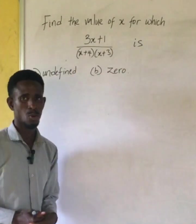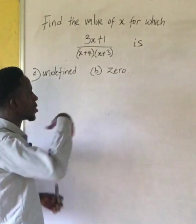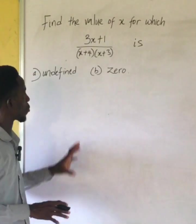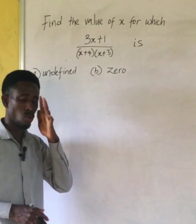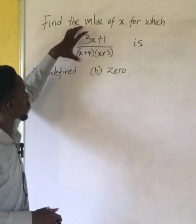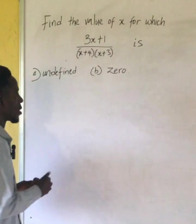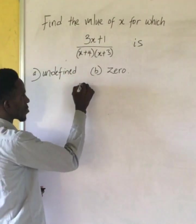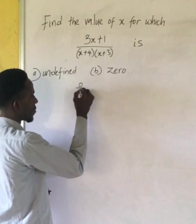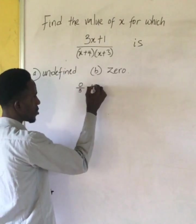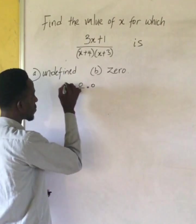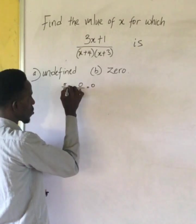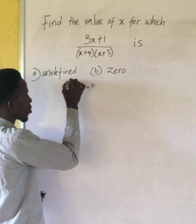And b says zero. Now it's just straightforward - if you understand what these two things mean, you'll know what you're supposed to do. Now when an expression is undefined, look at this: if I have zero over five, it's going to give me zero, right? But if I have five over zero, it is undefined.